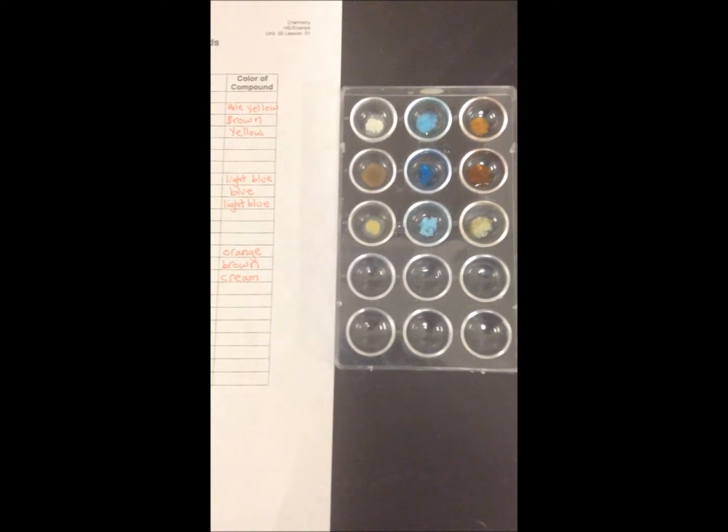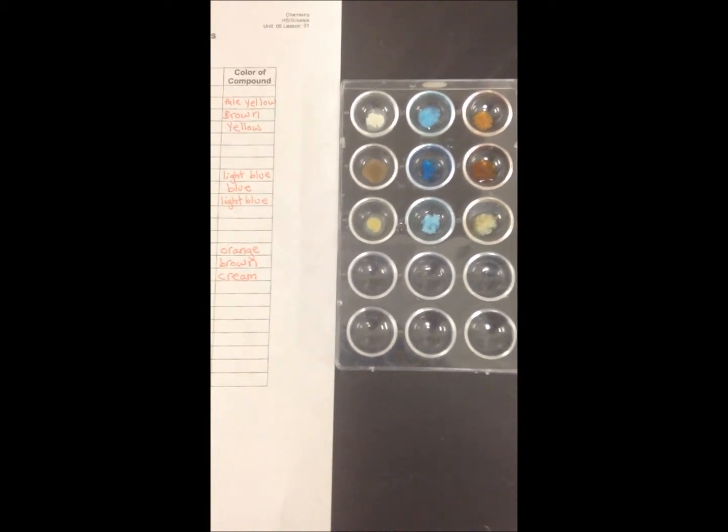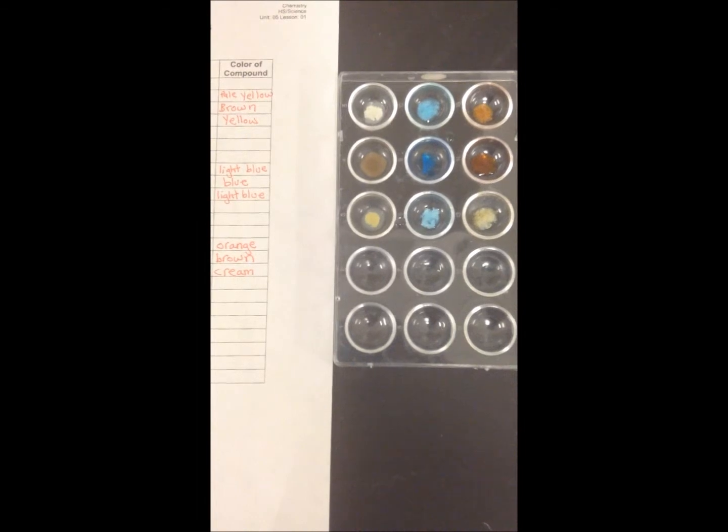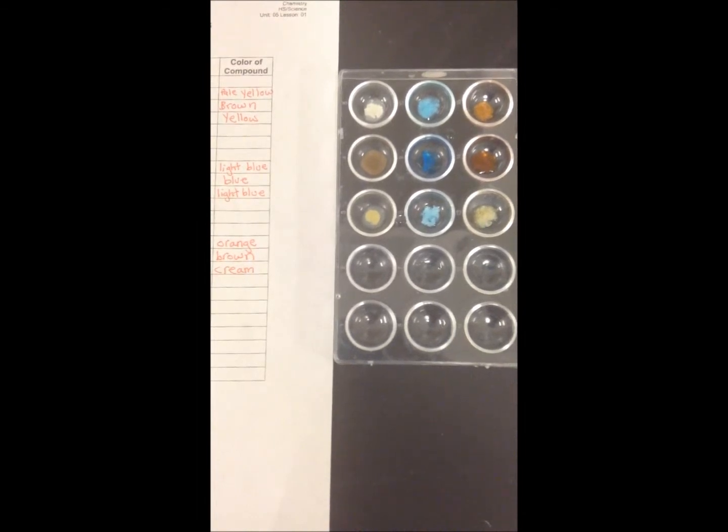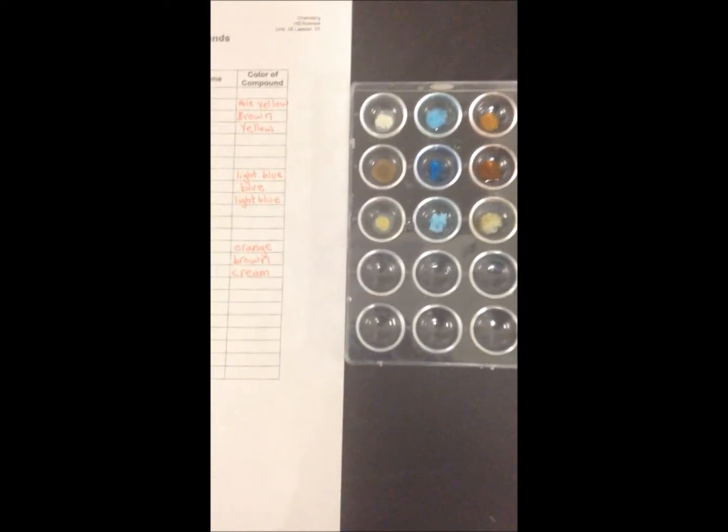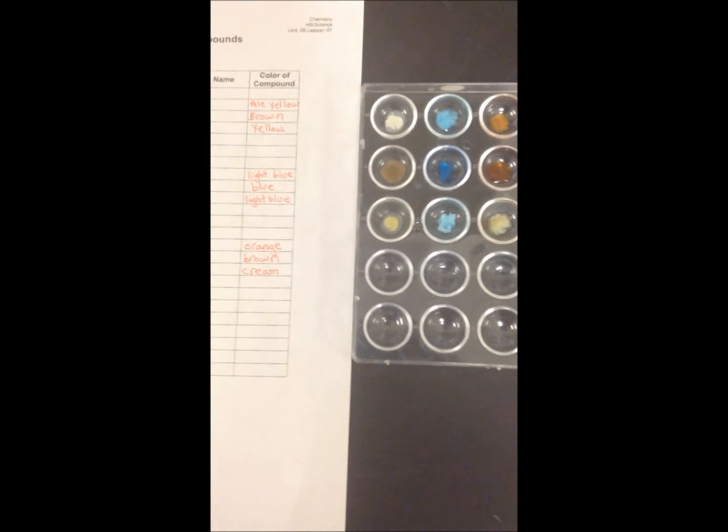You should have gotten pale yellow for the first, brown for the second, yellow for the third. For copper, you should have gotten light blue, blue, and light blue. For iron, you should have gotten orange, brown, and cream.